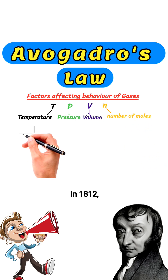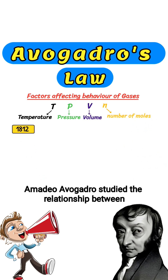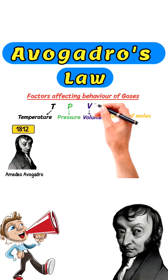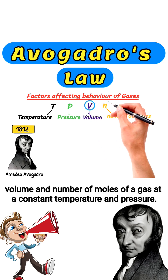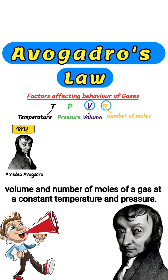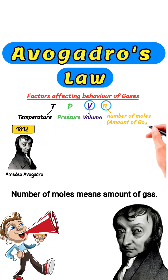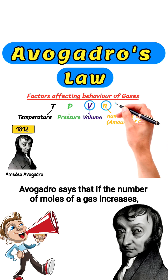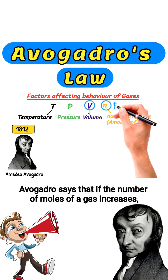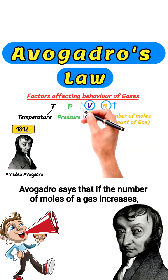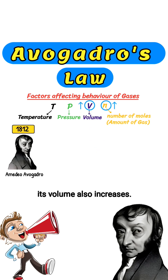In 1812, Amadeo Avogadro studied the relationship between volume and number of moles of a gas at a constant temperature and pressure. Number of moles means amount of gas. Avogadro says that if the number of moles of a gas increases, its volume also increases.